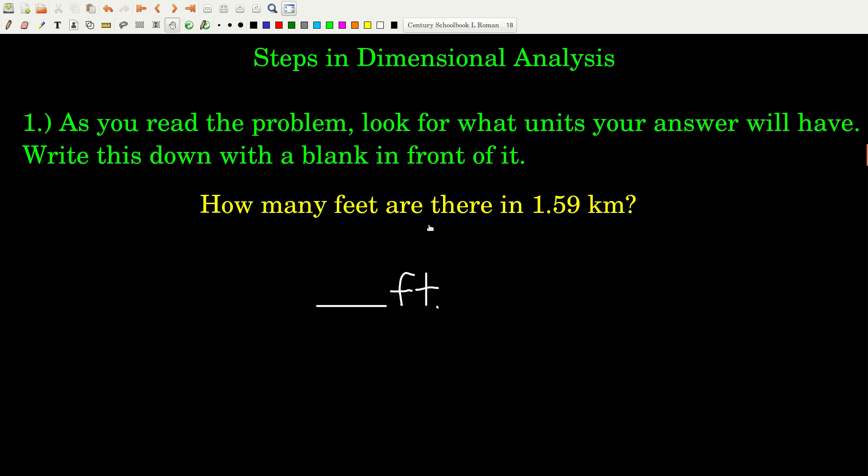Here are the steps for dimensional analysis. We're going to do a simple problem to illustrate each of the steps. So the first thing, you're reading a chemistry problem. And as you're reading that, one of the things you're going to really look for is what units the answer will have to be in. So this problem right here, how many feet are there in 1.59 kilometers? When we get our answer, what will its units be? It will be feet. So all you do is write down a blank, which we're going to fill in with the answer. The answer is what goes in here, and this is how we get this. And then those units, how many feet.